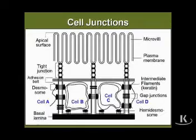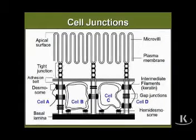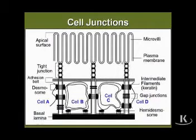First off, tight junctions or zonula occludens junctions are found only at the luminal surface of an epithelium. They serve as a barrier — they have punctate points of contact, sealing off the extracellular space between the opposed membranes, which are shown schematically in this picture.